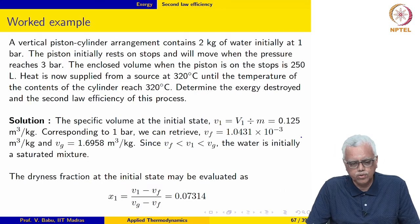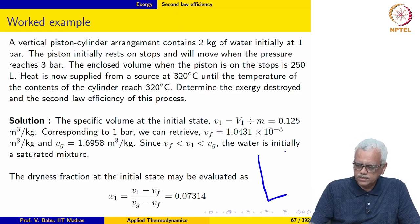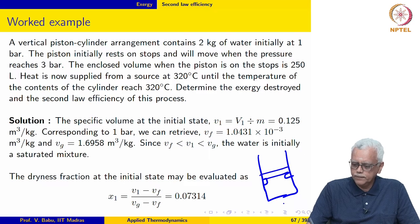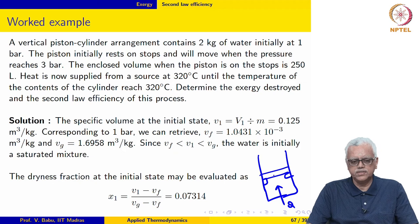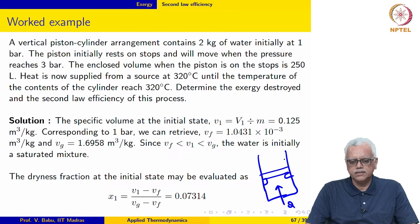Let us look at the next example, which is also a non-flow process. Here we have a piston-cylinder mechanism where the piston initially rests on stops. Heat is supplied to the system — the system being the water in the piston-cylinder assembly. Heat is supplied from a source at 320 degrees Celsius until the temperature of the contents of the cylinder reaches 320 degrees Celsius. We are asked to determine the exergy destroyed and the second law efficiency for this process.